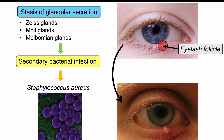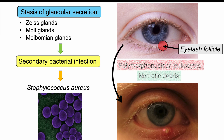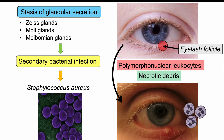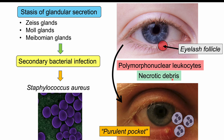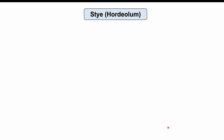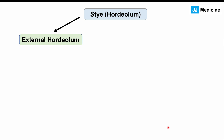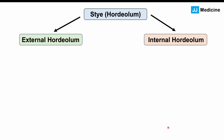When bacteria get into that clogged gland, there's going to be an immune response. Polymorphonuclear leukocytes come into the area to fight the bacteria, but also cause pus, swelling, and necrotic debris. All of this causes a purulent pocket or small abscess to form on the eyelid — a little bump. Depending on the type of gland affected, we get either an external hordiolum or an internal hordiolum.